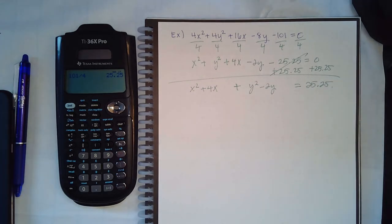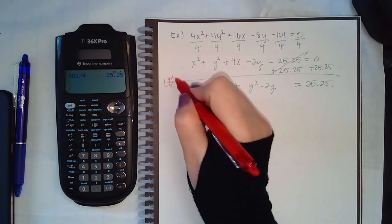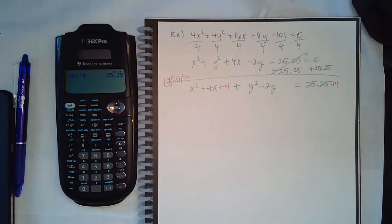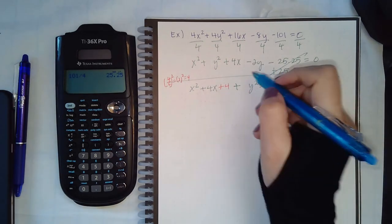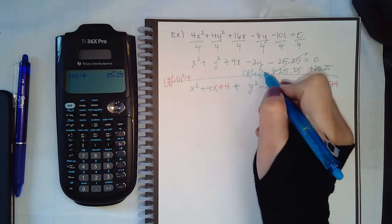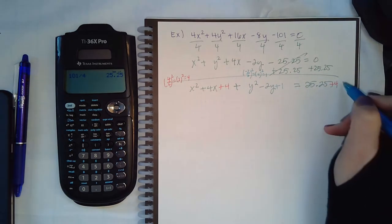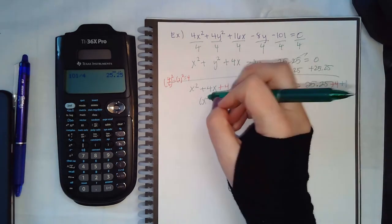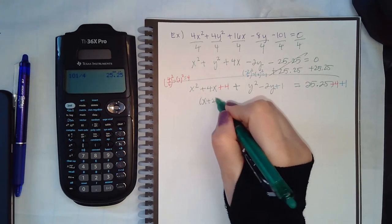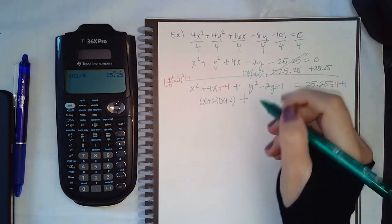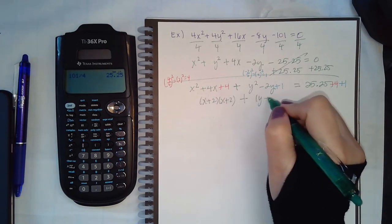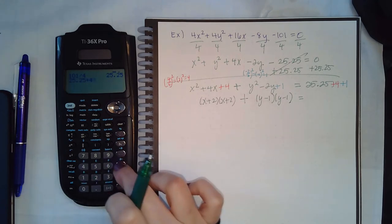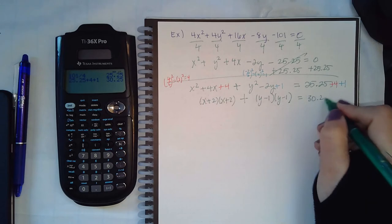For x: take 4 over 2, squared — that's 2 squared, which is 4 — so add 4 to both sides. For y: take negative 2 over 2, squared — that's negative 1 squared, which is 1 — so add 1 to both sides. On the left, x squared plus 4x plus 4 factors into x plus 2 times x plus 2, and y squared minus 2y plus 1 factors into y minus 1 times y minus 1. On the right, 25.25 plus 4 plus 1 equals 30.25.